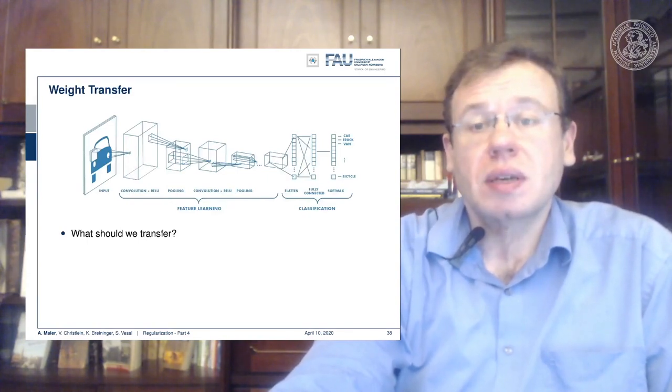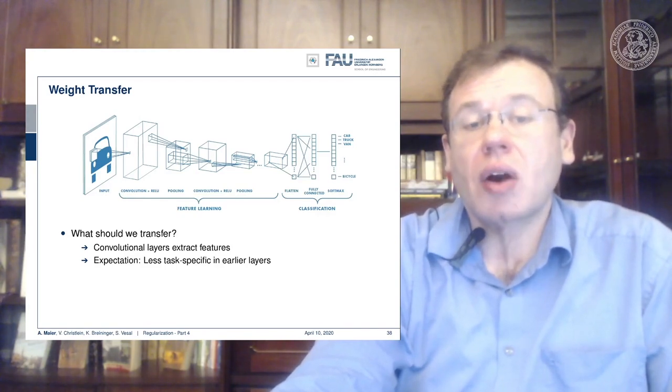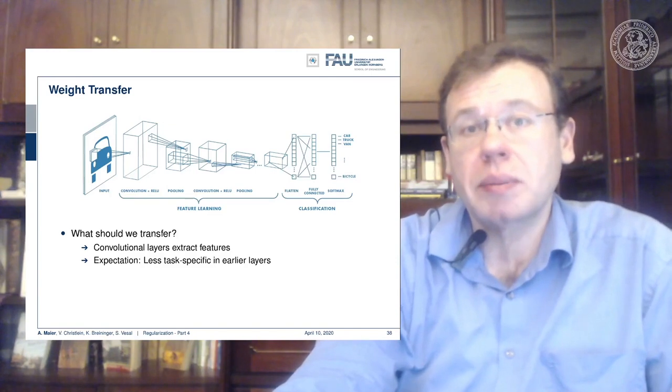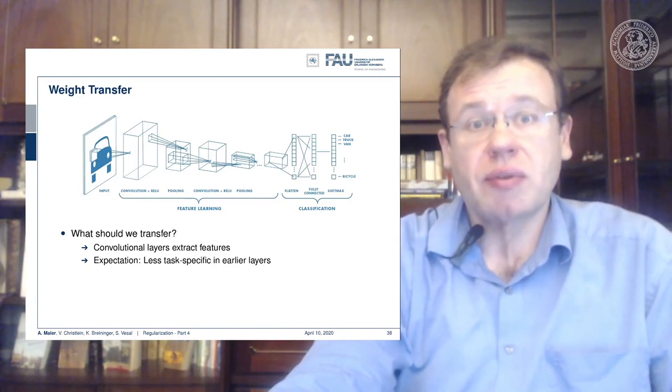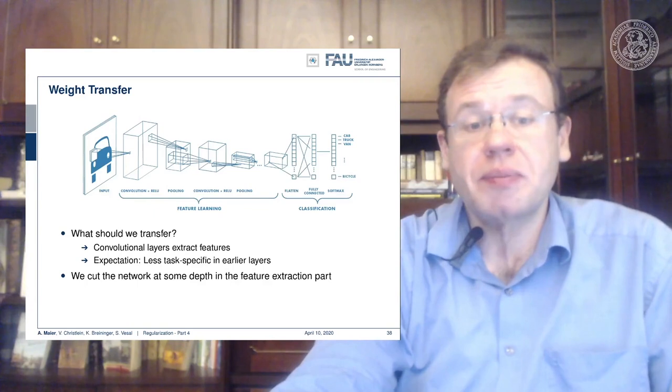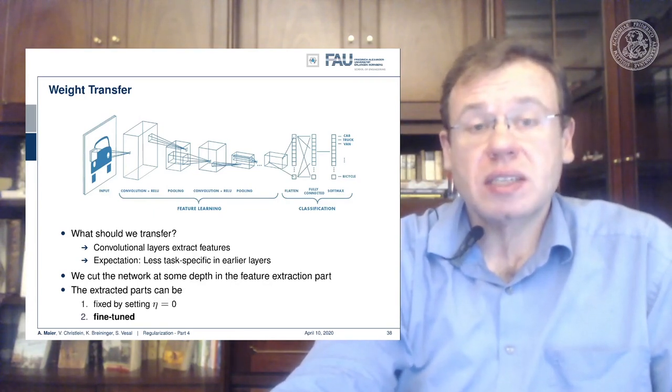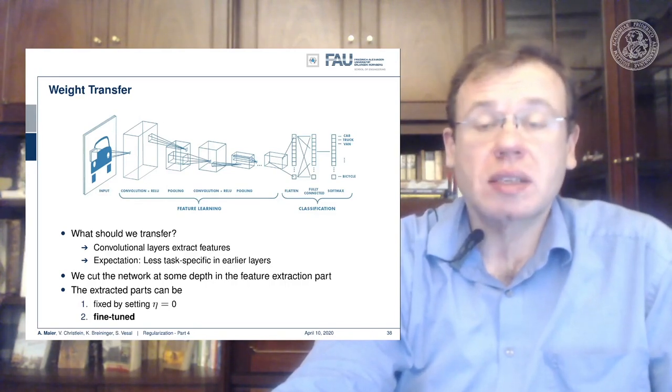So now the question is, what should we transfer? Well, the convolutional layers extract features, and the expectation now is that less task-specific features are in earlier layers. We have seen that in a couple of papers. We can also see that in our videos on visualization. Typically, those have more basic information and are likely to contain information that is worth transferring. So we cut the network at some depth in the feature extraction part. And for those extracted parts, we can, for example, fix the learning rate to zero. So if we set eta to zero, they won't change. Or you can start fine-tuning them.